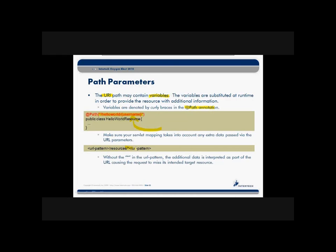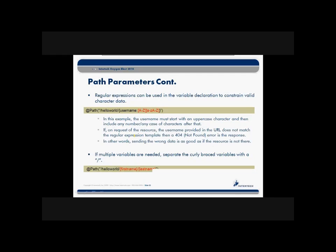When you're using path mechanisms to pass variables into your resources, make sure your web.xml document URL pattern matching has provided for that type of path information. In addition to the simple names for our variables on the path, we can even use things like regular expressions to help dictate or constrain what valid characters can be on that path.